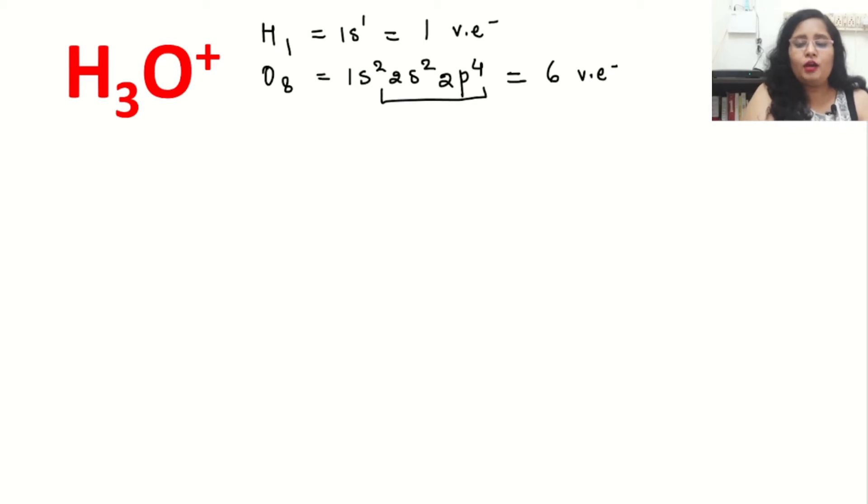Now from this calculation, we will get the total number of valence electrons. Total valence electrons in this ion is 3 times 1 for hydrogen plus 6. And the most important second tip is: if there is a positive charge on that ion, we will always minus the positive charge.